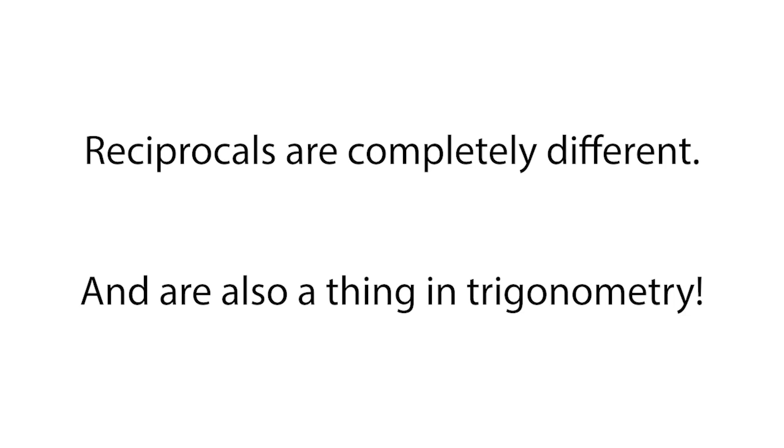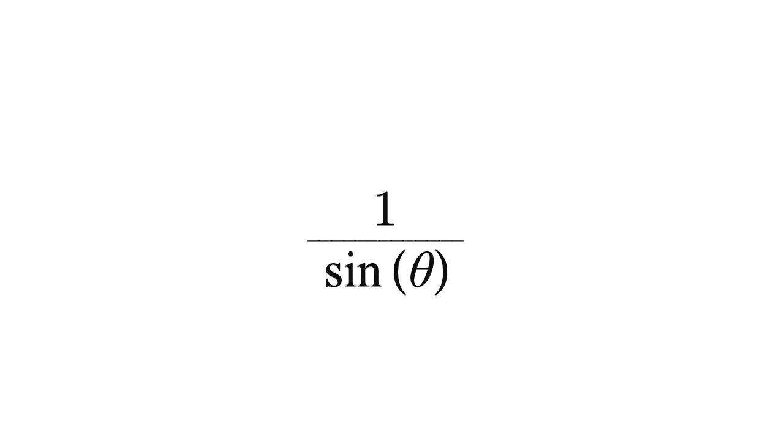Reciprocals are completely different, and they're also a thing in trigonometry. Reciprocal functions are what happens when you flip a function. So the reciprocal function of sine is 1 over sine, cosine is 1 over cosine, and tangent is 1 over tangent. Now these reciprocal functions have specific names.